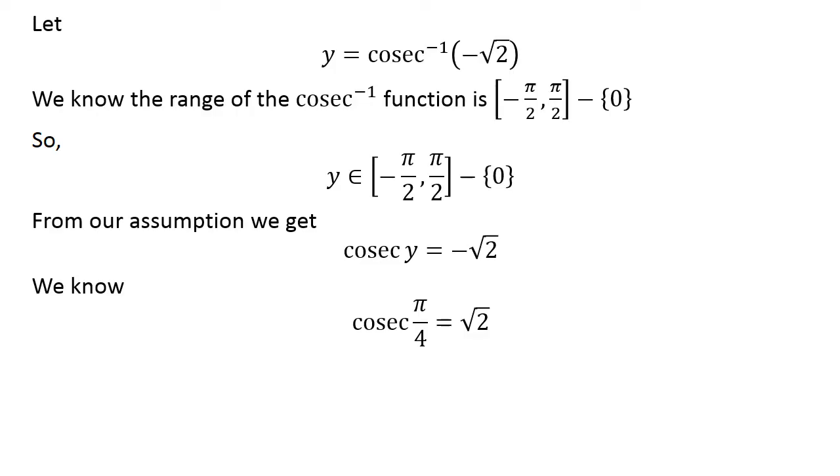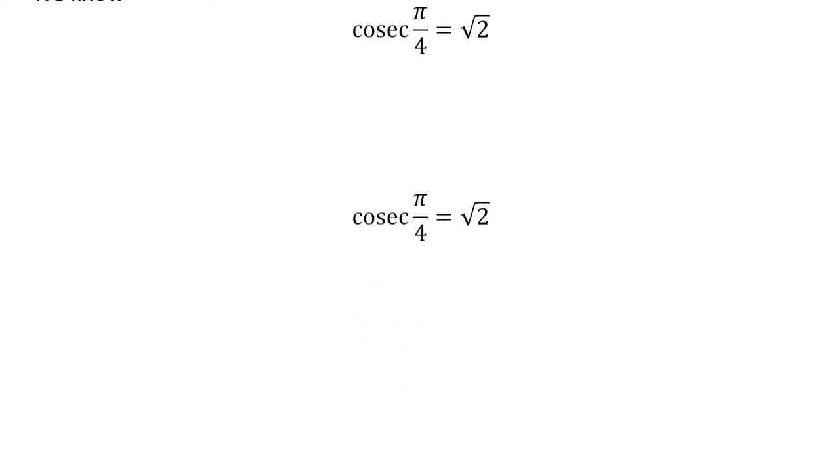We know cosec(π/4) = √2. We also know the identity cosec(-x) = -cosec(x).